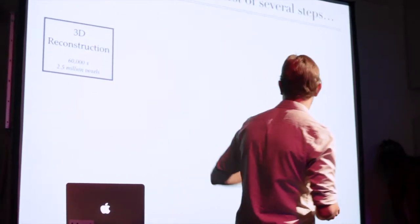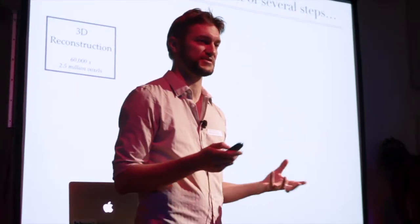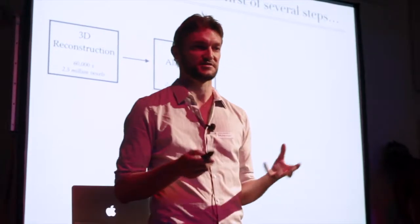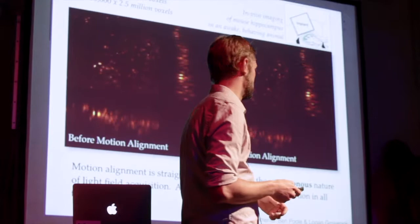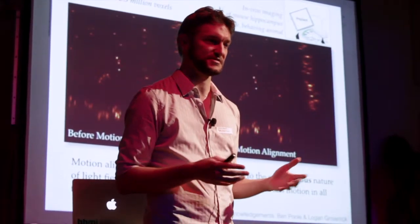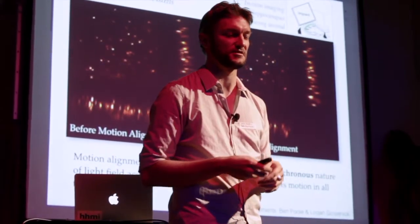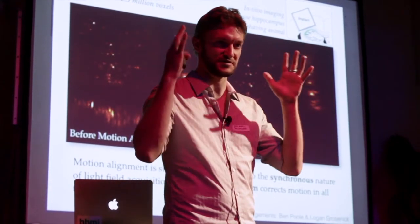So 3D reconstruction is actually just the first stage in a much longer process that we use to understand what's going on in this data. Because once you have volumes, of course, you want to actually do something with them. So one of the first things you want to do is do some motion correction. We do experiments in living animals. This is, for example, a mouse running on a ball, similar to what you just saw a short time ago.